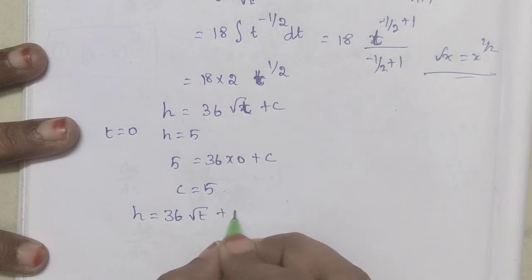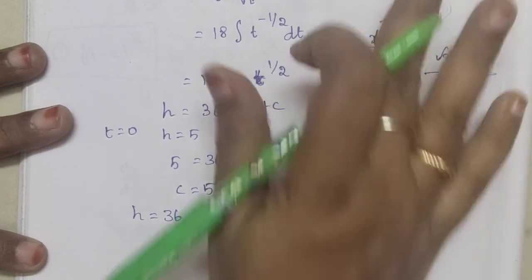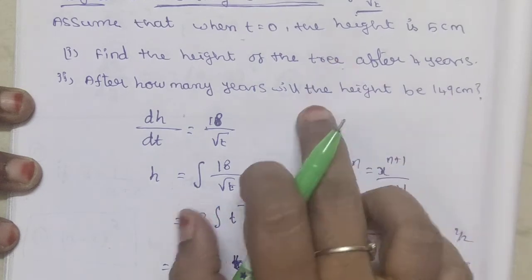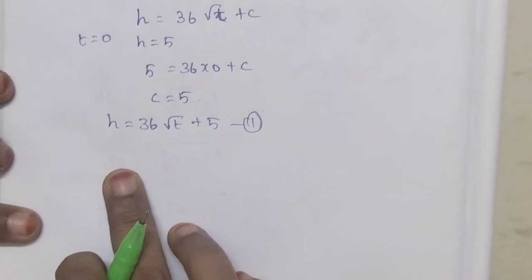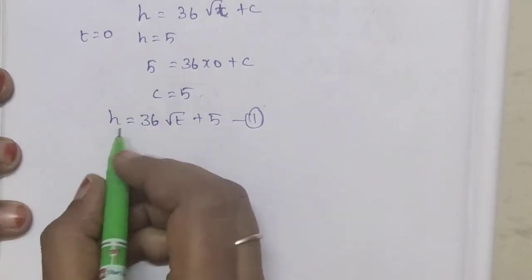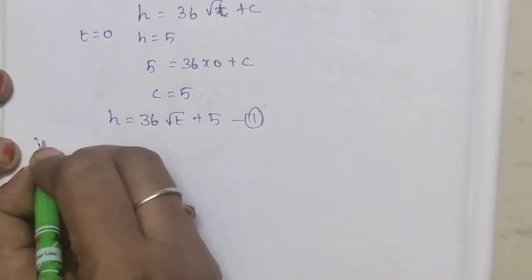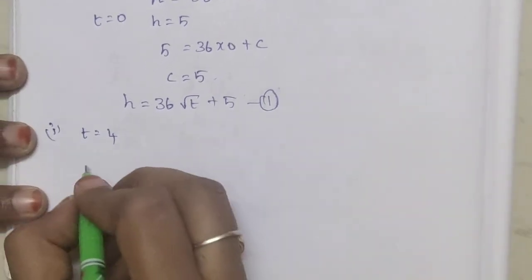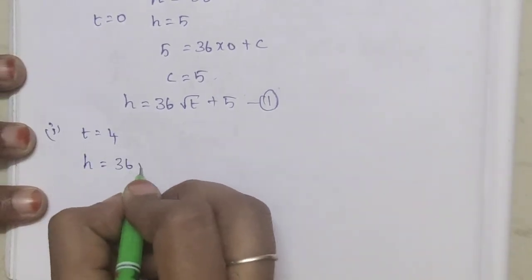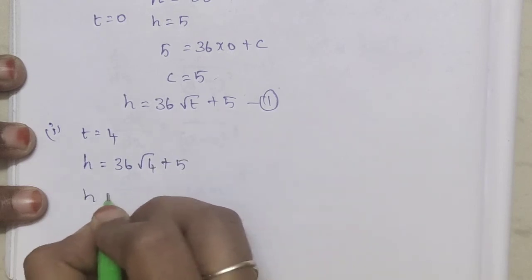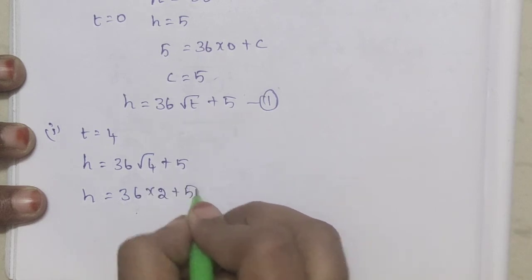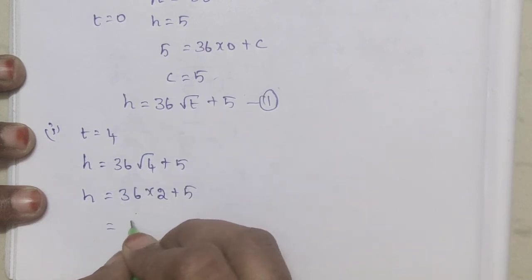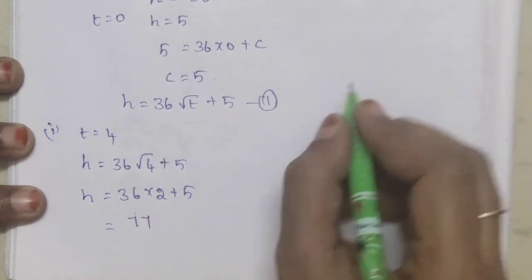This is the height of the tree after 4 years. When t equals 4, h equals 36√4 plus 5, which equals 36 times 2 plus 5, equals 72 plus 5, equals 77 cm.